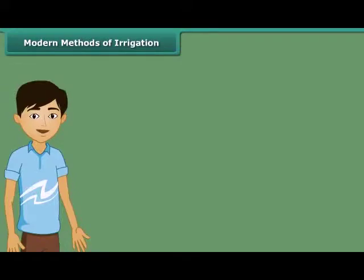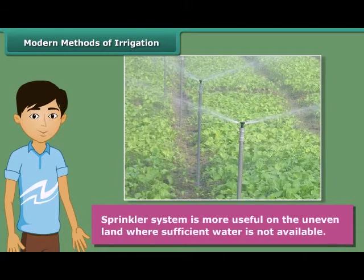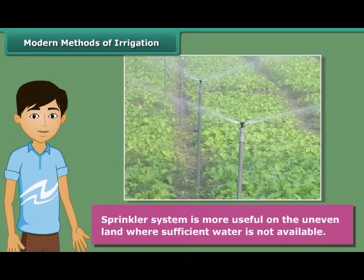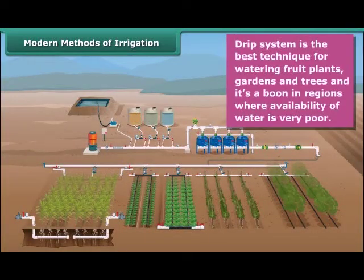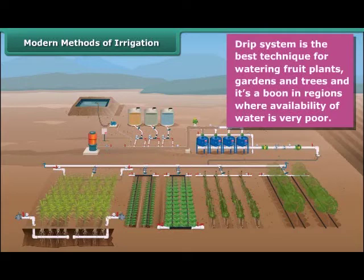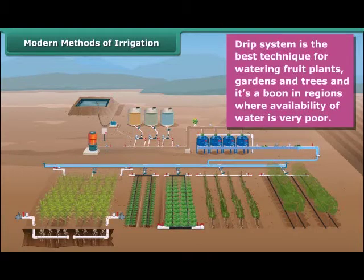Let us now know modern methods of irrigation. A sprinkler system is most useful on uneven land where sufficient water is not available. In this system, perpendicular pipes having rotating nozzles on top are joined to the main pipeline at regular intervals. When water flows through the main pipe under pressure with the help of a pump, it escapes from the rotating nozzles and gets sprinkled on the crop as if it is raining. Next is a drip system, where water falls drop by drop just at the position of the root. It is the best technique for watering fruit plants, gardens and trees, and water is not wasted at all, making it a boon in regions where water availability is very poor.